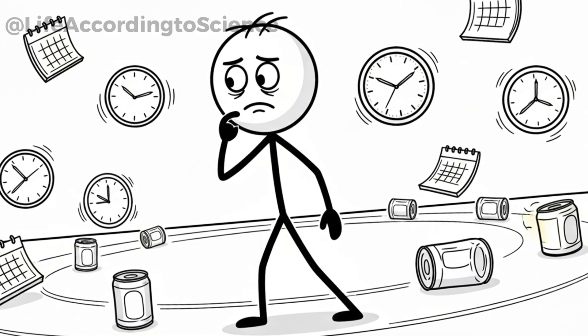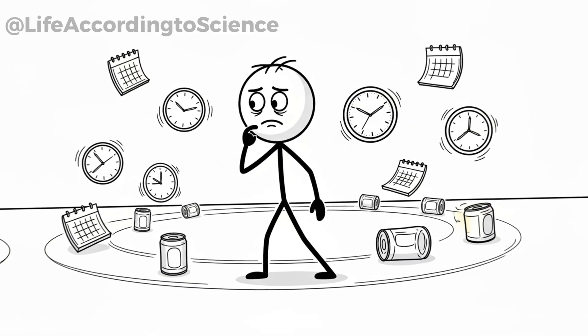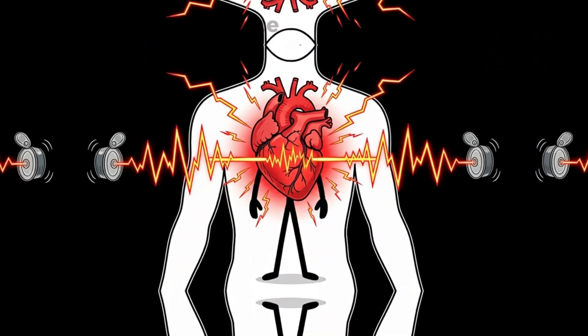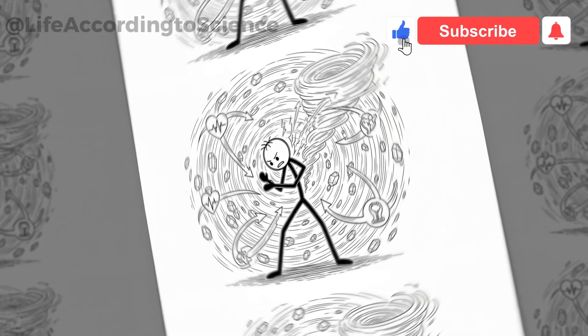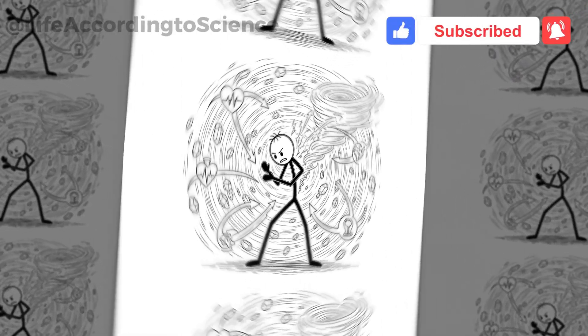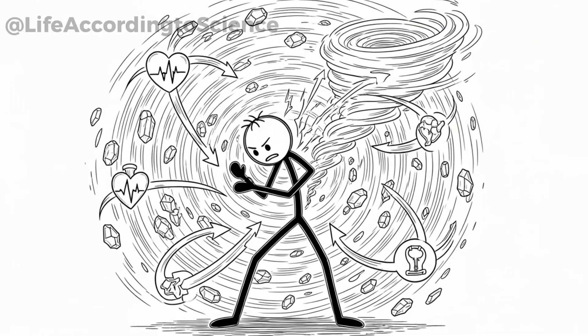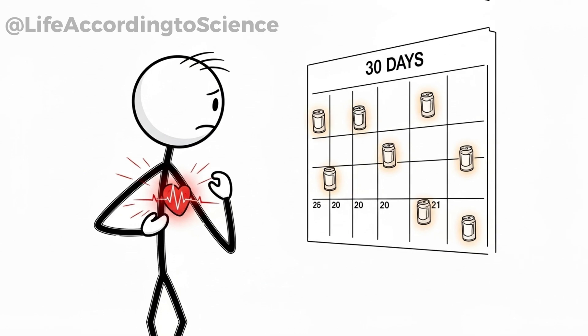Energy drinks put your cardiovascular system through a stress test every time you crack open a can. Caffeine increases your heart rate and blood pressure. Sugar thickens the load on your metabolism. And together, they create a storm inside your body. For someone with a healthy heart, the effects might be tolerable, at least at first. But over 30 days of daily use, your heart doesn't get a break.